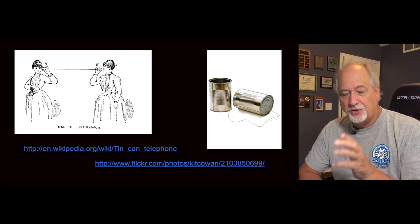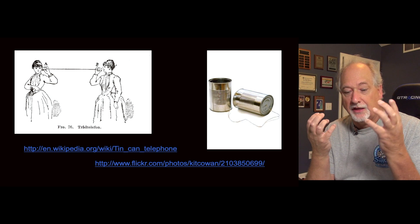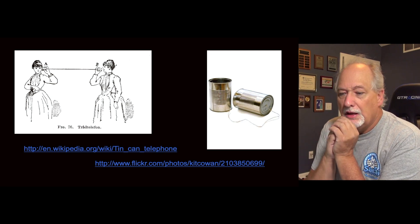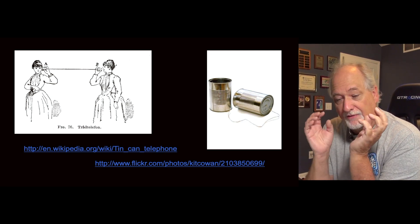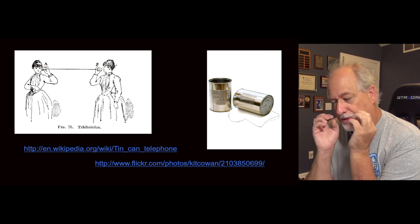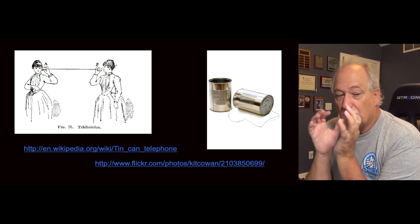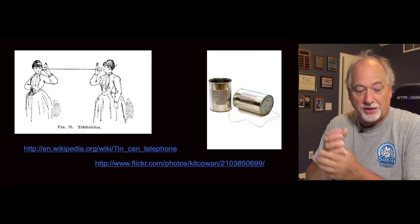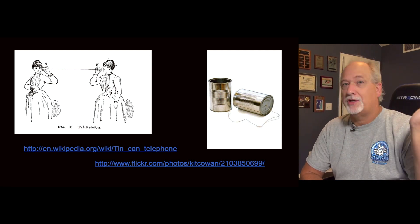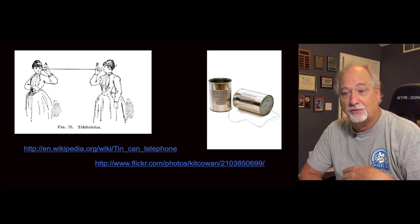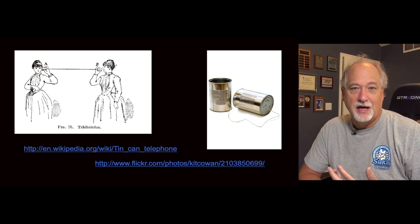As computers were going to share data — some computers were going to have data, and other computers were going to want data — they thought the way to do this is not necessarily to have a permanent connection to that data, because there would be so many computers and so many sources of data. In 1960, they had no imagination there would be billions; they thought there would be 10,000, and they thought that was a lot.